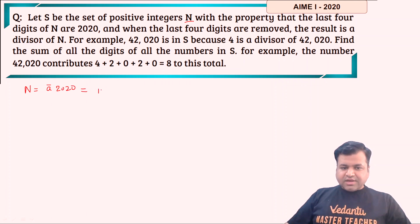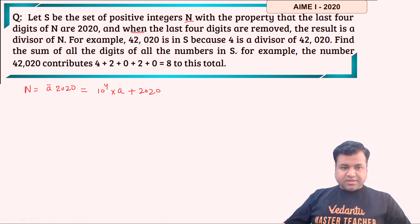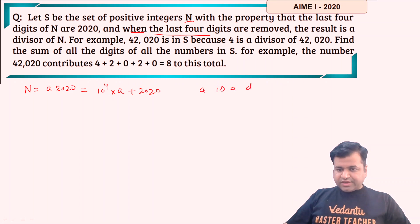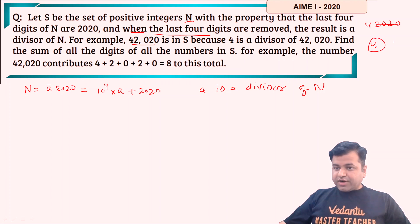We can write n as 10^4 × a + 2020, where a is any number. The question further says that when the last four digits are removed — that is, when 2020 is removed — the result, which is a, must be a divisor of n. For example, take 42020: if we remove 2020, the remaining 4 must be a divisor of 42020, which is true.